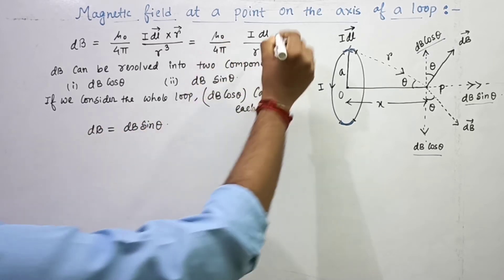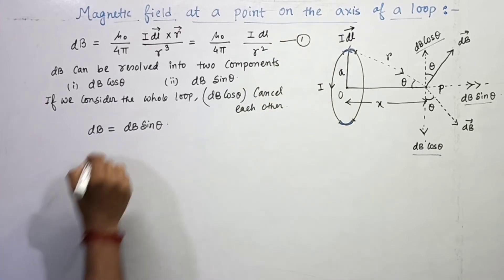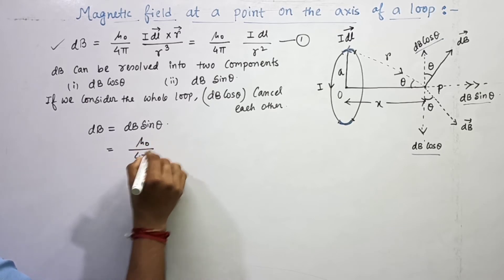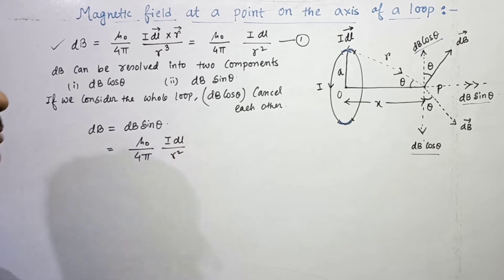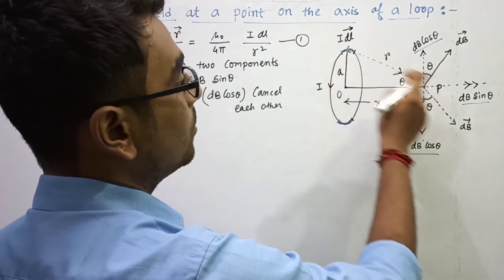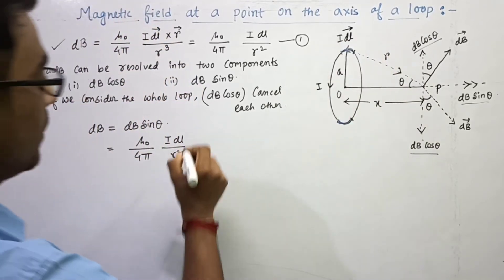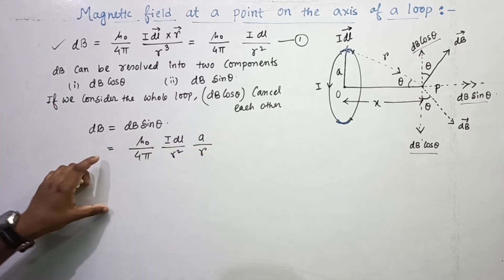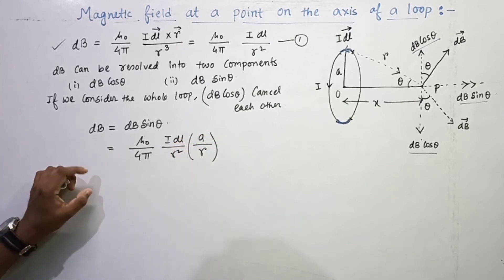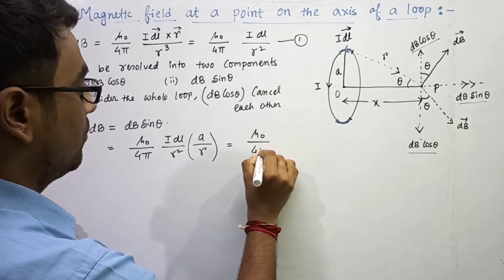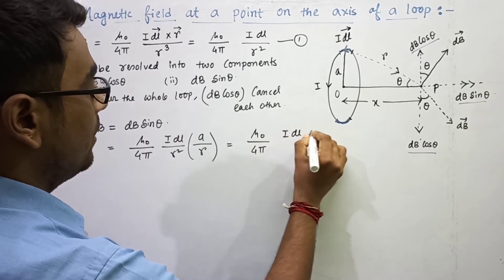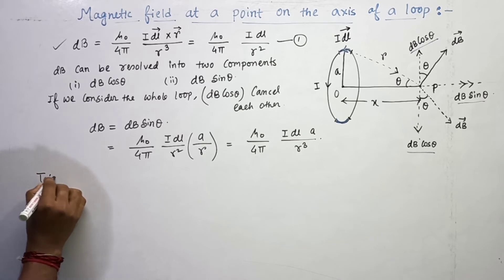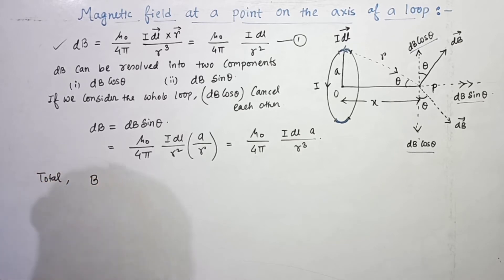So the net contribution is dB sinθ. From equation 1, dB = μ₀/4π × I·dL / r². For sin θ from the triangle, perpendicular is a and hypotenuse is r, so sinθ = a/r. Now for total magnetic field B, we integrate dB sinθ over the whole loop.